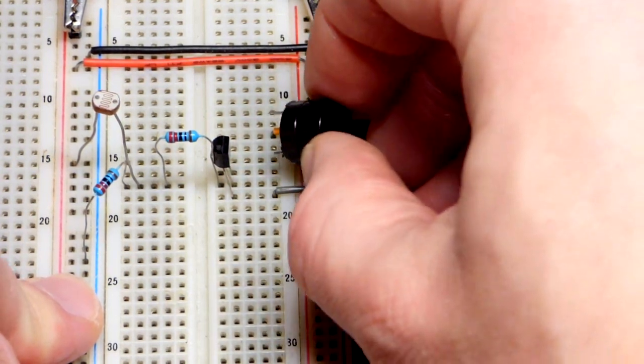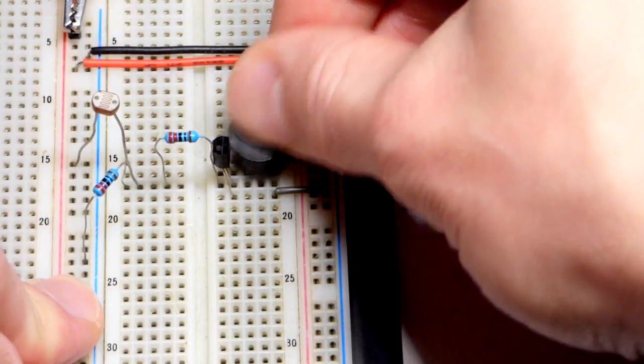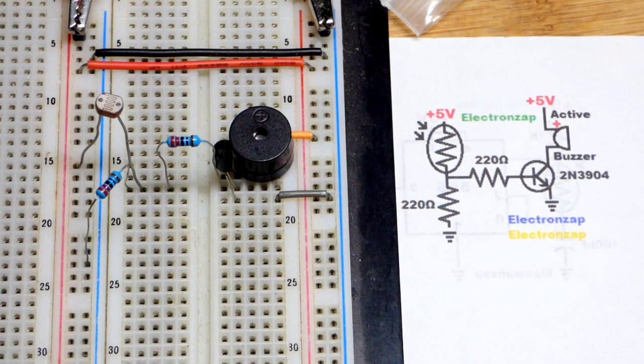So we're going to go up to the collector for the negative side and then the positive side. We're going up to that jumper up there that goes to the positive terminal right there.